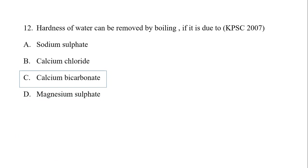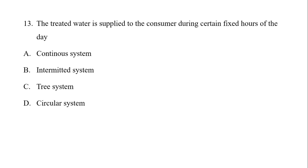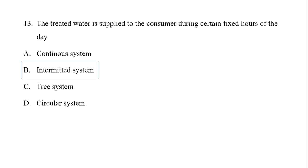Water is applied to the consumer during fixed hours of the day. We have discussed the distribution system layouts: ring system, radial system, grid iron system, and tree system. When there is insufficient pressure or insufficient water, we provide water in fixed hours — this is known as the intermittent system. The alternative is the continuous system.